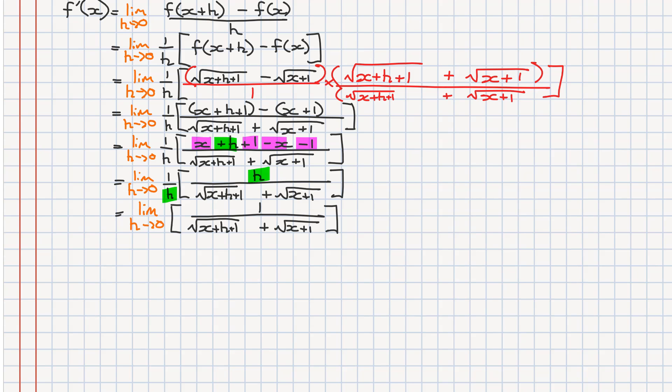What I'm going to do is observe h as they approach zero. Basically what we get is the x plus zero plus one added to x plus one, and that's all over one. Simplifying, we're going to get x plus one plus x plus one all over one. Then simplifying once again, we're going to get two x plus one all over one.